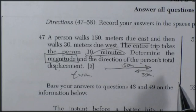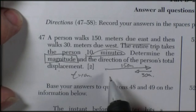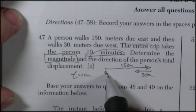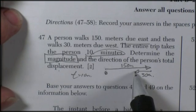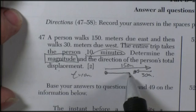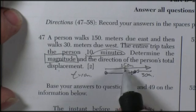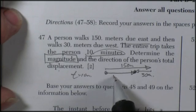Displacement, this is a vocabulary question. If you started here, how far were you displaced? Well, you end up here. And so your displacement is that way. And 150 minus 30, this would be about 120 meters.